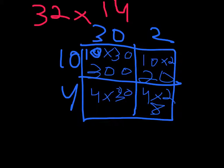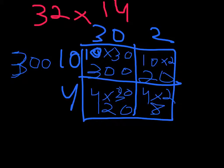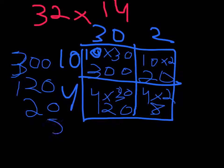And 4 times 3 equals 12. Then we put a 0. Then we add 3, 300, and 120.